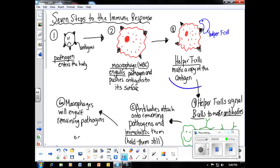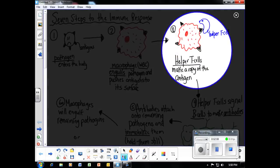The third step to the immune response is that the macrophage will then signal a helper T cell to make copies of the antigen. This is like a photocopier making copies of a page of your textbook.